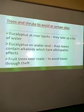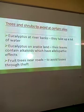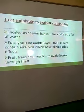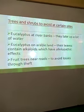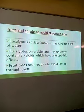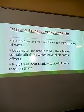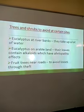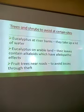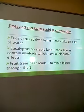As we grow the trees, there are certain species that should be avoided at particular sites. For example, eucalyptus should not be planted at the river banks because they take up a lot of water and may dry up the rivers, especially if it is a seasonal or small river.